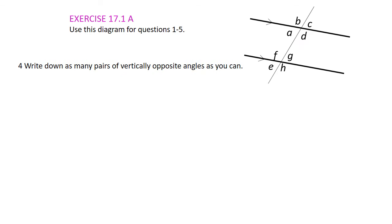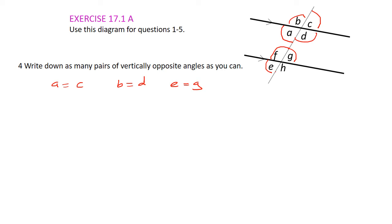Write down as many pairs of vertically opposite angles as you can. Vertically opposite angles are equal. So for example, angle a and the angle opposite it is c, so a is equal to c because they're vertically opposite. Then b is equal to d. Looking at the bottom, e must be equal to g, and f must be equal to h.